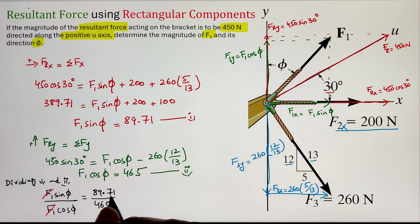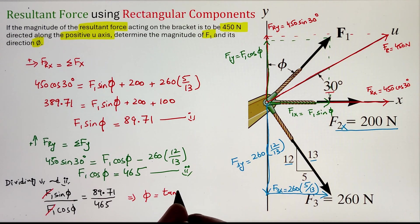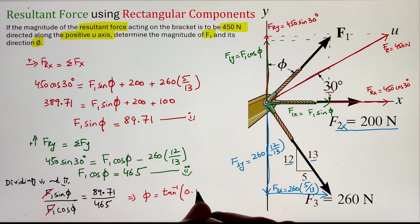That ratio of sine phi and cosine phi can be converted into tangent phi. Now, taking the tangent inverse, we can figure out our angle. So in this case, it is coming as 10.91.